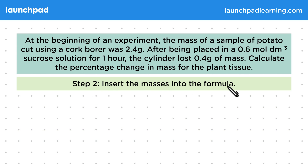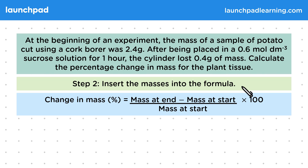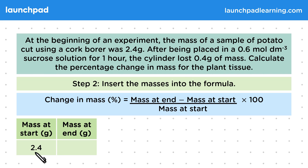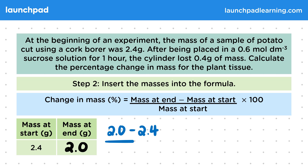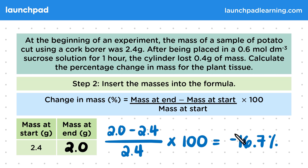Step two: insert the masses into the formula. The change in mass as a percentage equals the mass at the end minus the mass at the start, divided by the mass at the start, times 100. The mass at the start was 2.4 grams, and we've just calculated that the end mass is 2 grams. This gives us 2 minus 2.4, divided by 2.4, times 100, which equals minus 16.7%. So the percentage change in mass for the plant tissue is minus 16.7%.